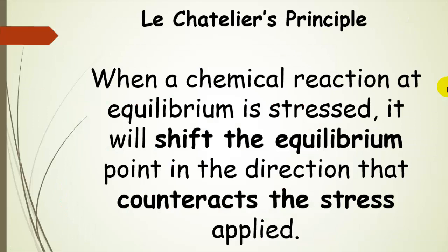When we have a chemical reaction at equilibrium and we stress it, the equilibrium point is going to shift in the direction that counteracts the stress applied. So what does that mean in terms of pressure and volume changes?